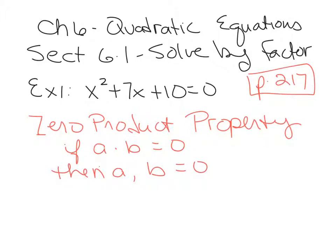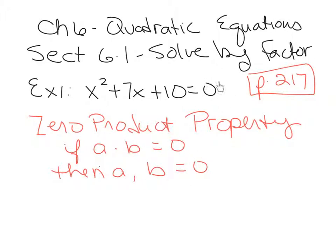If A times B equals 0, then either A equals 0 or B equals 0, or they could both equal 0. When we look at this example, this is not a multiplication yet. That is why we factor. We're going to take this quadratic equation, make sure it's equal to 0, or this zero product property doesn't work.